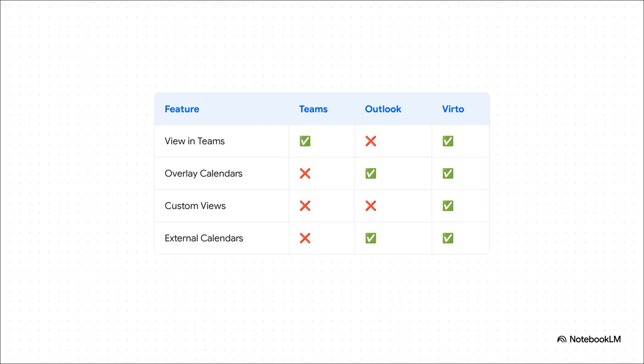Native Teams? Yeah, it keeps you in the app, but you can't overlay calendars. Outlook? It lets you overlay, but it yanks you out of Teams. Virto is the only one that checks all the boxes. It gives you that Outlook power with overlays and custom views right inside your main workspace.